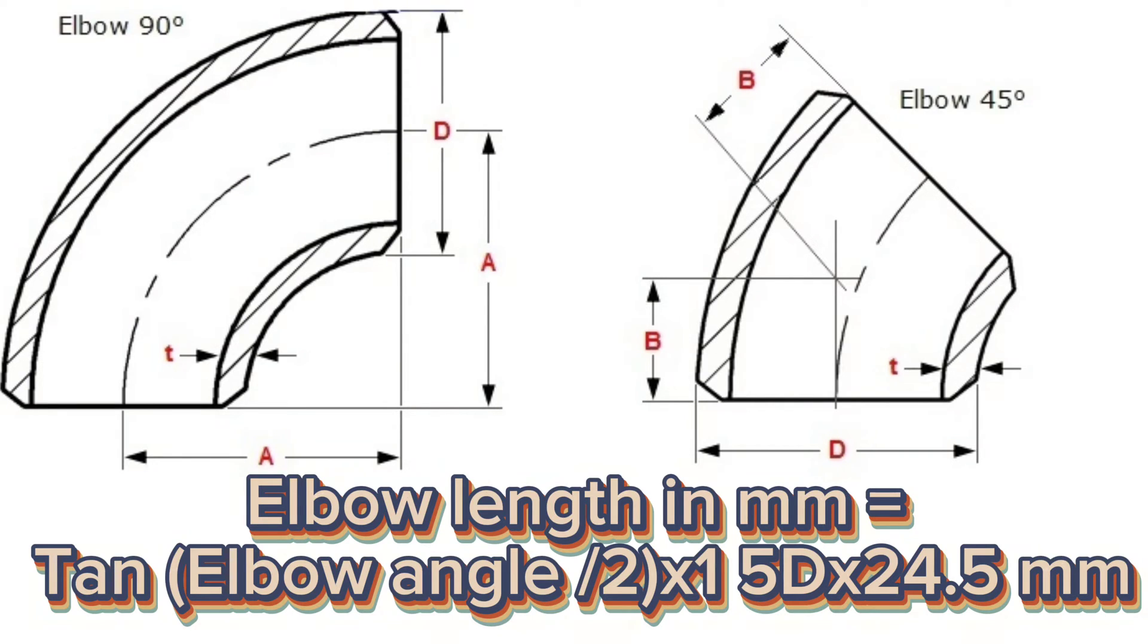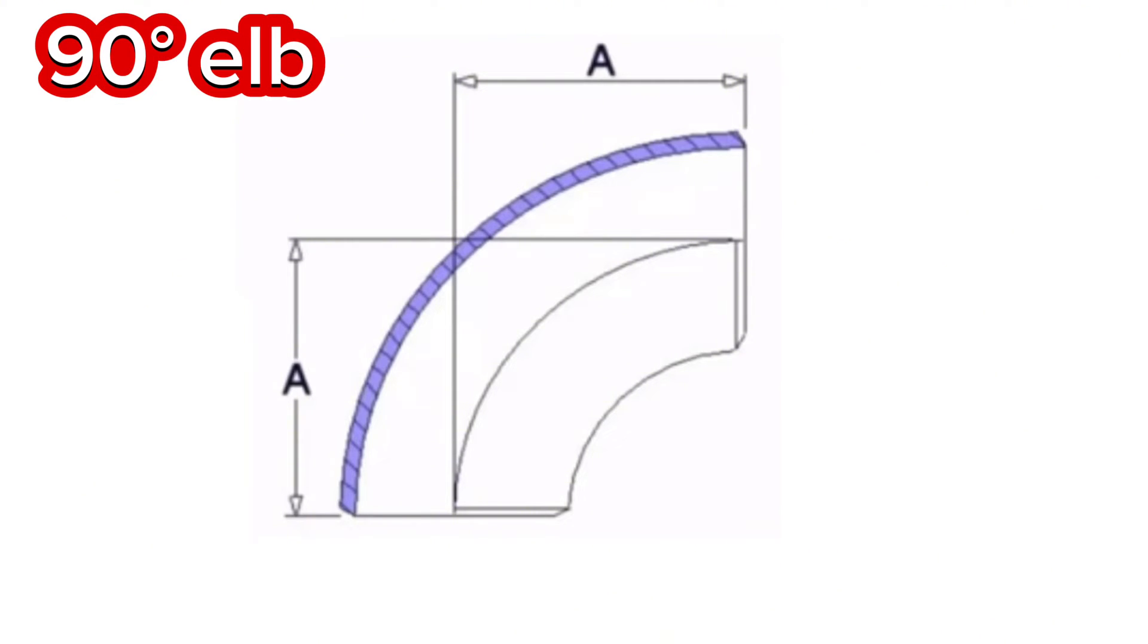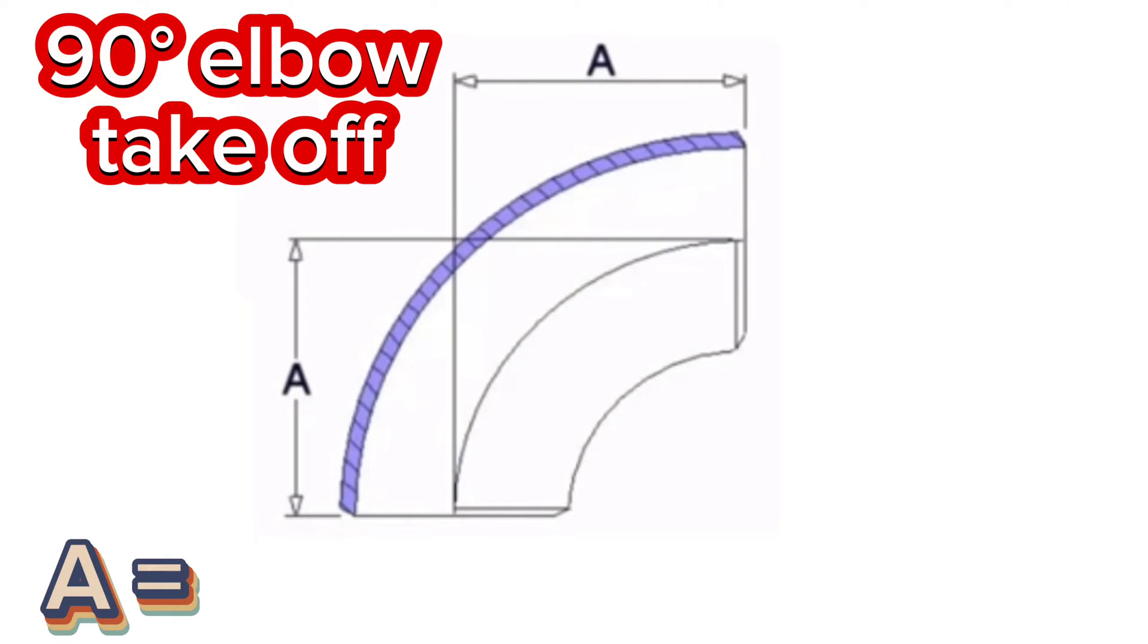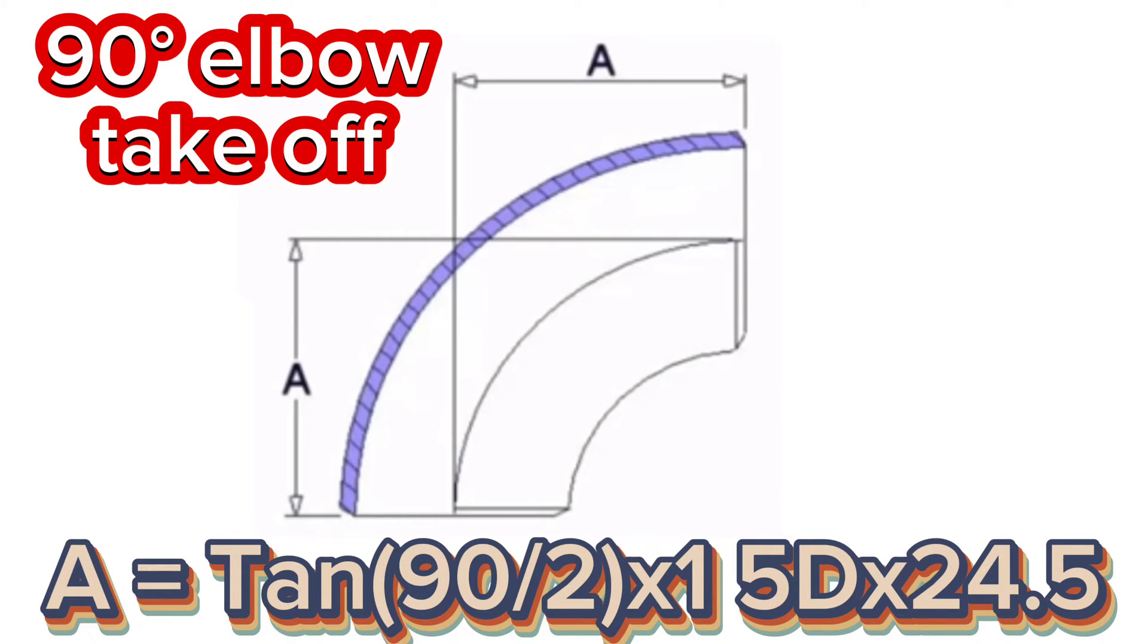Now let's find the takeoff for 90 degrees and 45 degrees long radius elbow. This is the formula to takeoff for 90 degrees long radius elbow. A equals tangent, 90 halves, times 1.5 d times 25.4. On this formula A is elbow center to end dimension takeoff, d is size of elbow in inch.